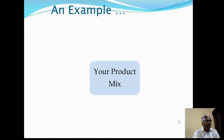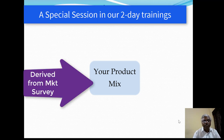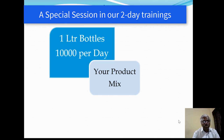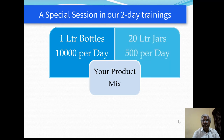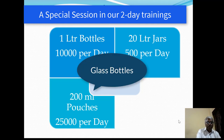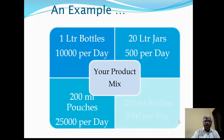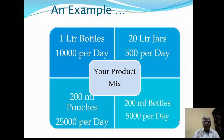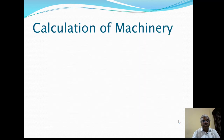Let's begin with a market survey example. You decide a product mix: one-liter bottles at 10,000 per day, 20-liter jars at 500 per day, and 200 ml pouches — though pouches may be banned in some states, so you can substitute glass bottles or 200 ml bottles at 5,000 per day. Note that in some states even smaller bottles are banned due to the PET ban.